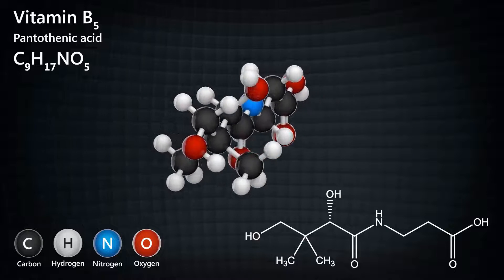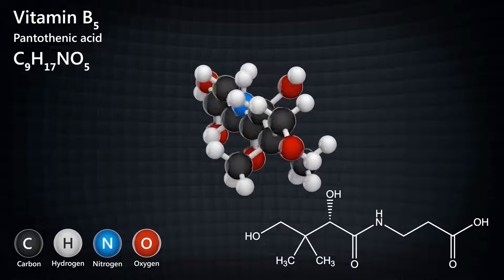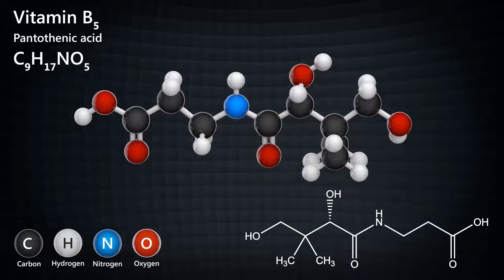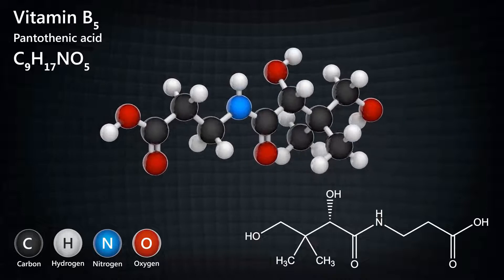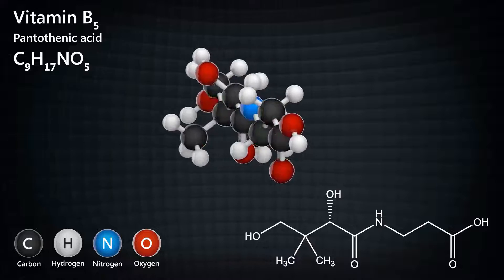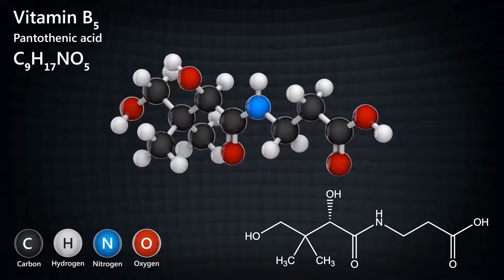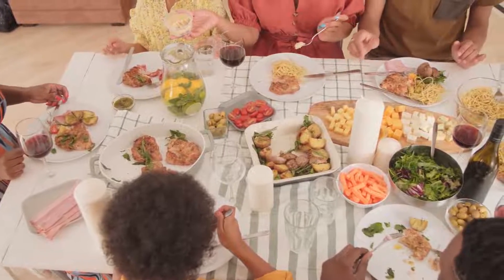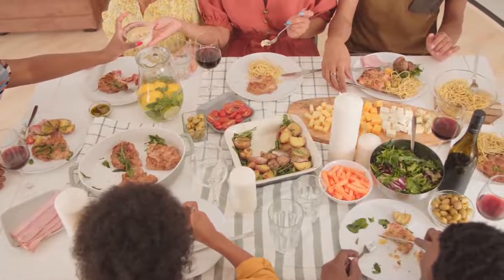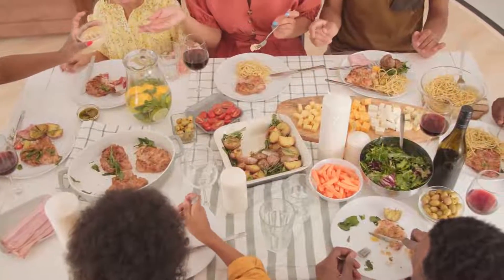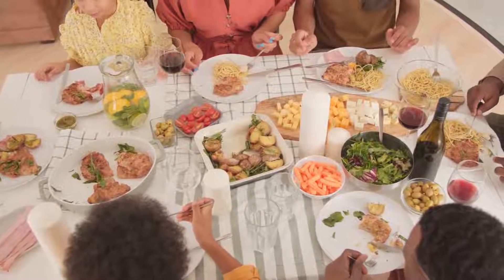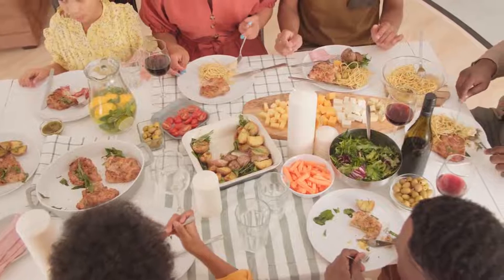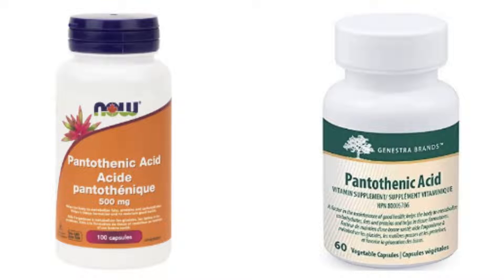Let's first take a look at the structure of pantothenic acid. As you can see, it already looks quite complex, but when it gets metabolized to CoA, it becomes even bigger and more complex. Like other vitamin Bs, pantothenic acid is found in almost everything that we eat, so it's extremely rare to be deficient in pantothenic acid, and you can also take it as a supplement, usually in the form of calcium pantothenate.